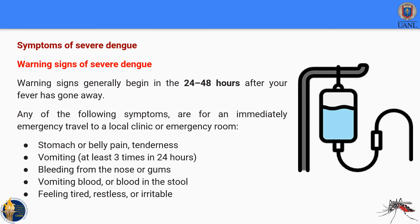The warning signs of severe dengue appear between 24 and 48 hours after your fever has gone away. Any of the following symptoms require an immediate emergency visit to a local clinic or emergency room: stomach or belly pain or tenderness; vomiting at least three times in 24 hours; bleeding from the nose or gums; vomiting blood or blood in the stool; and feeling tired, restless, or irritable. These five symptoms are the most important warning signs of severe dengue.